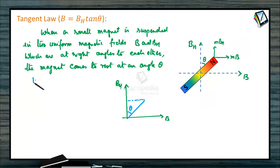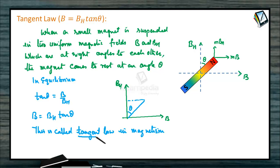In equilibrium, tan theta is equal to B by BH, or the magnetic field B can be written as BH tan theta. This is called Tangent Law in Magnetism. This is called Tangent Law.